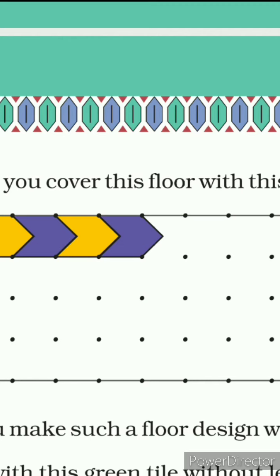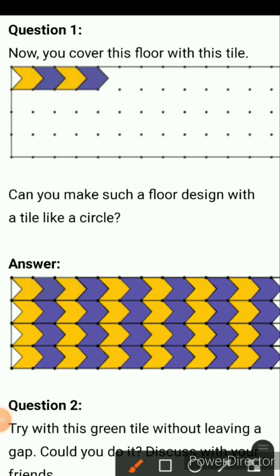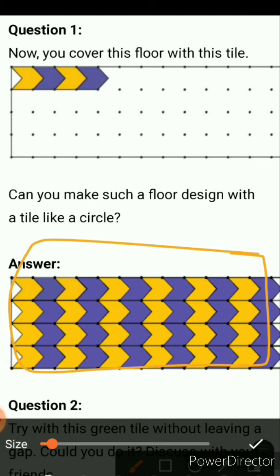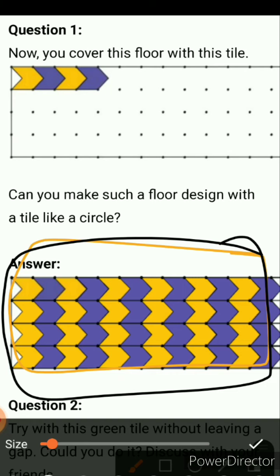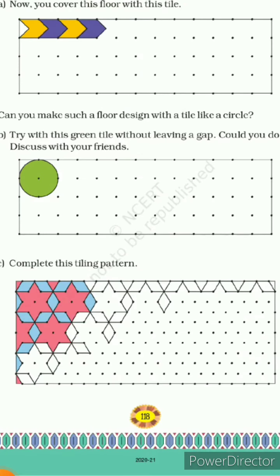Here you have two types of tiles — one is yellow and another one is blue. The pattern goes: first yellow, then blue, then yellow, then blue. We will draw the same design and shade it. So students, when you complete your tiling pattern, your pattern looks like that with the help of blue and yellow color. Aapko aisa hi pattern apne book mein banana hai using pencil or crayons.